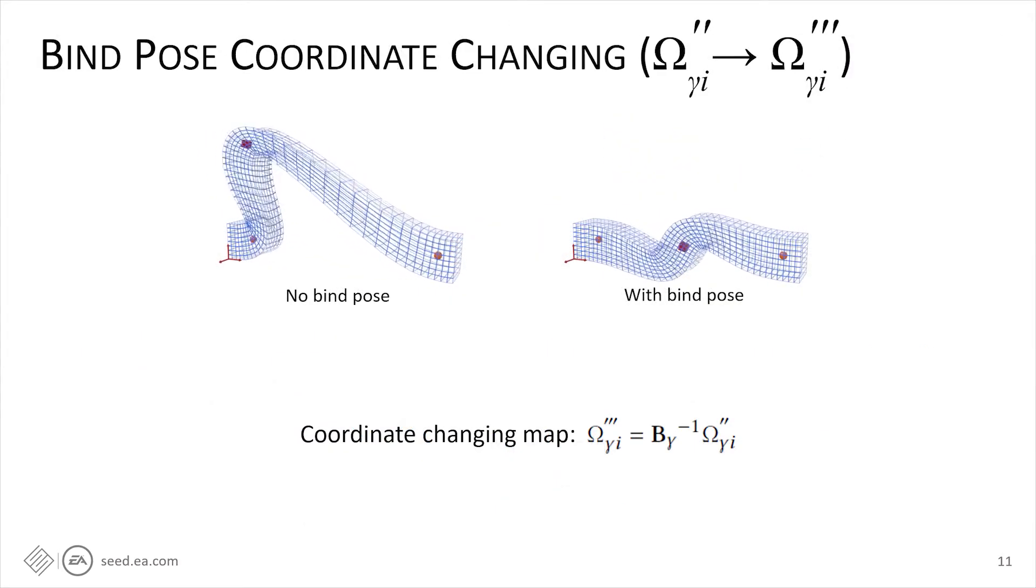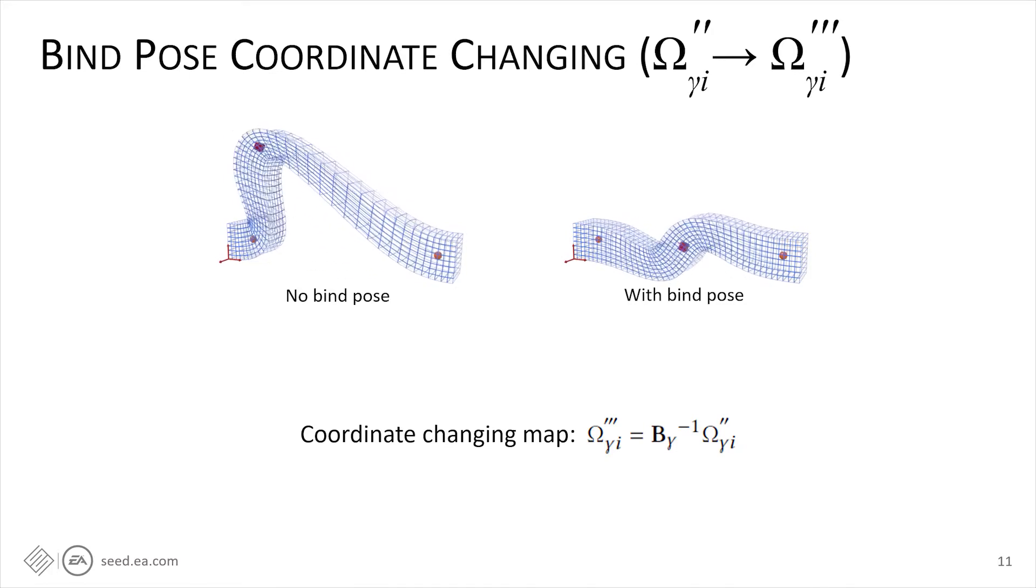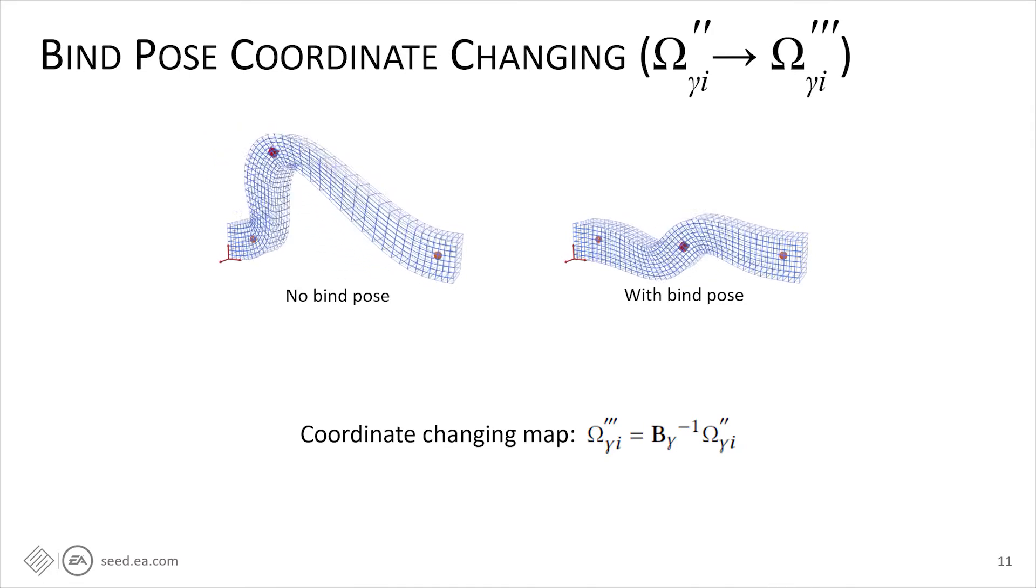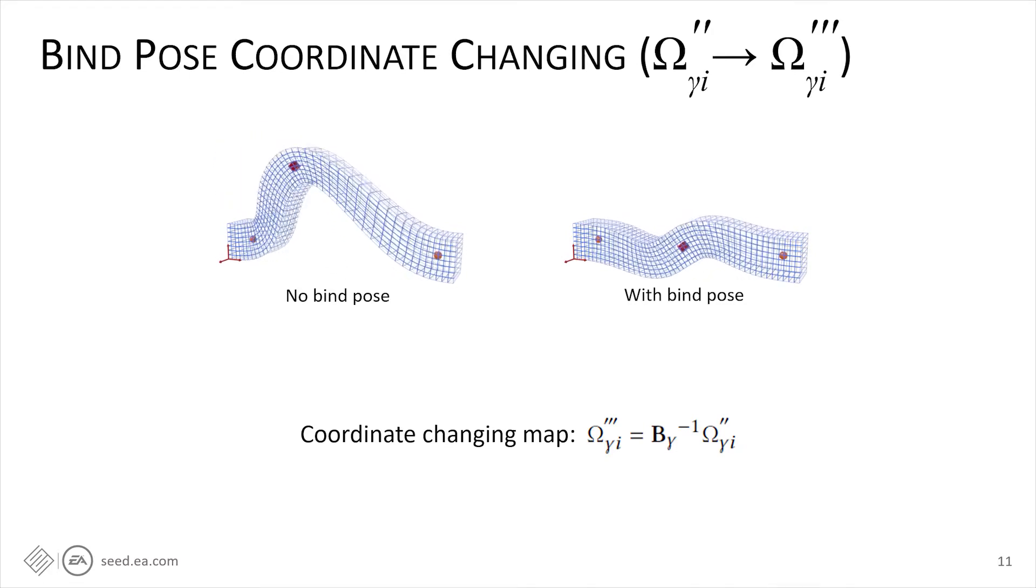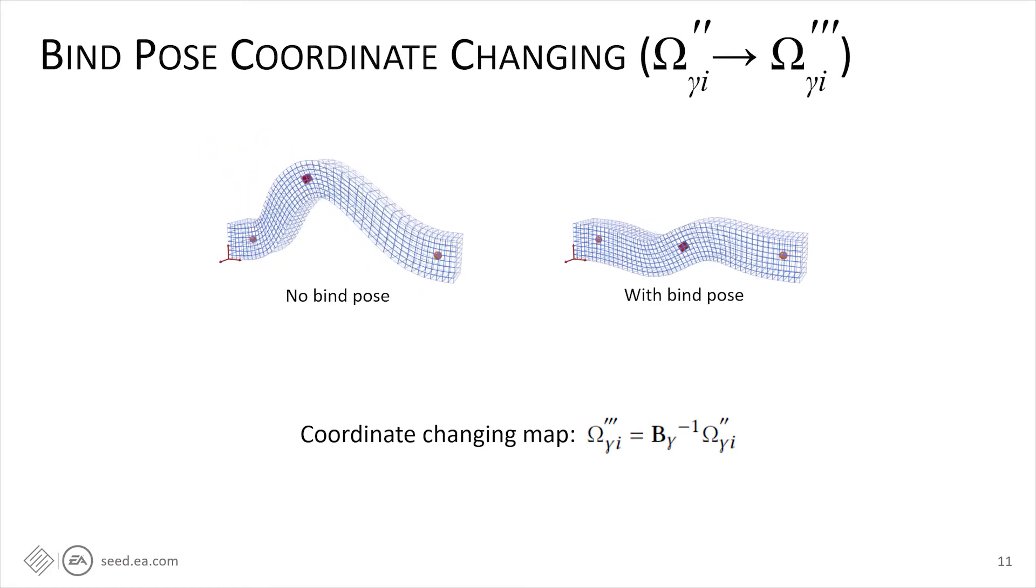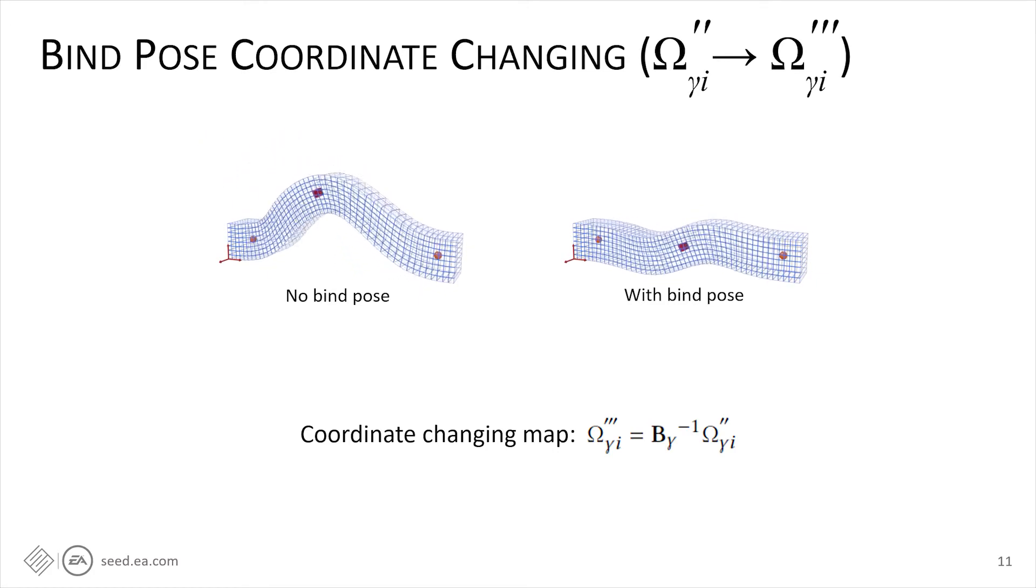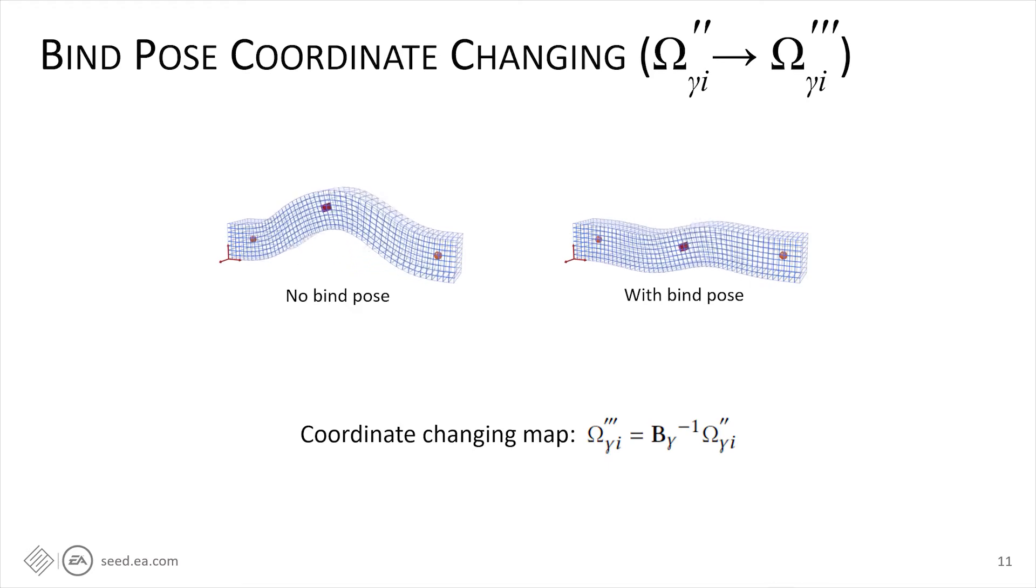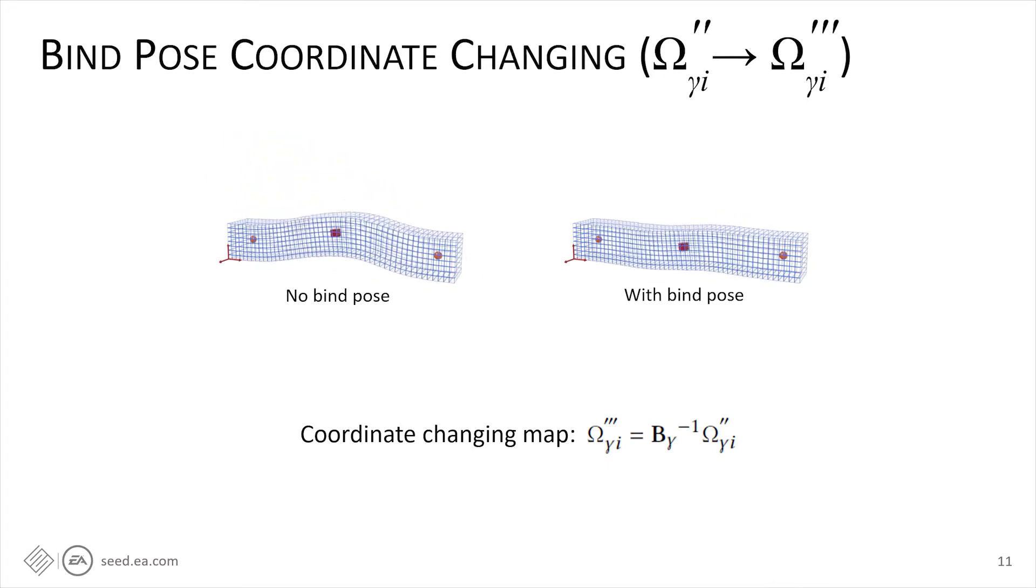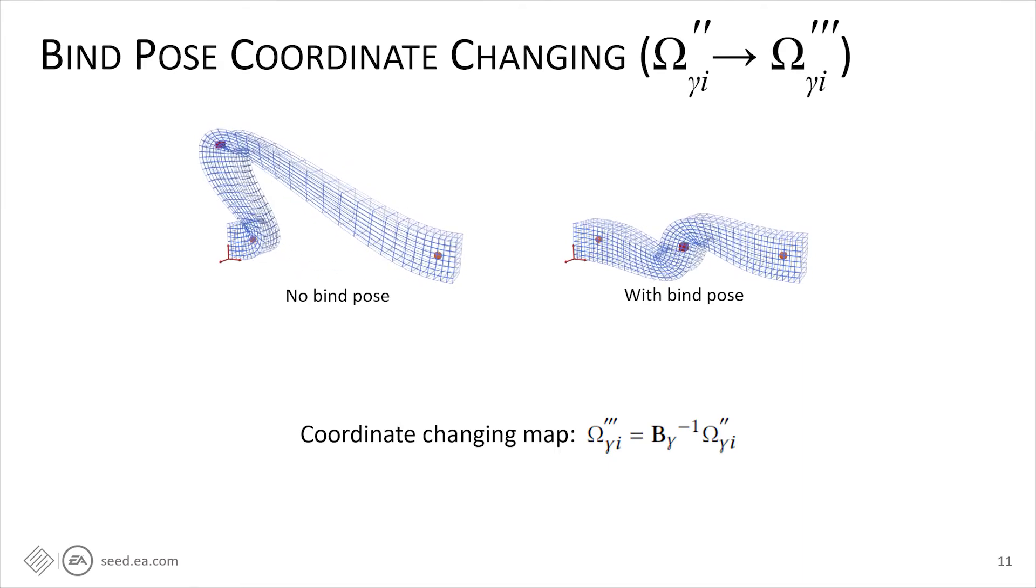The third map is the bind pose coordinate changing map. So for a skinning model, the bind pose contains the transformation of bones when we set up the model. It is the reference to move the bones when we perform animation. We add the bind pose by pre-multiplying the inverse of the bind matrix B sub gamma, where gamma is the bone index.